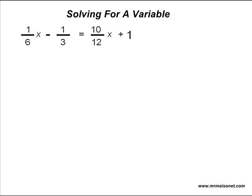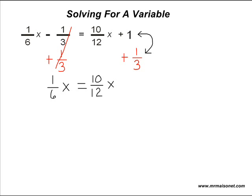The opposite of negative 1 third is positive 1 third. That will cancel itself out on the left, but we balance our equation by writing the same thing on the right-hand side of the equal sign. We should be able to add 1 whole and 1 third together, which is simply positive 1 and 1 third. Now we have the equation 1 sixth times x is equal to 10 twelfths times x plus 1 and 1 third.